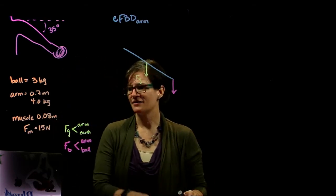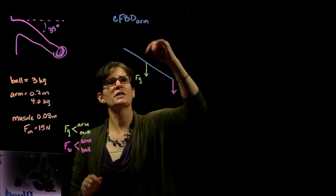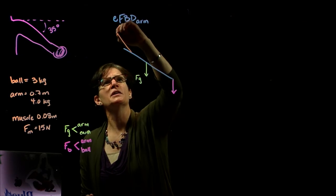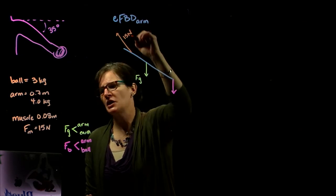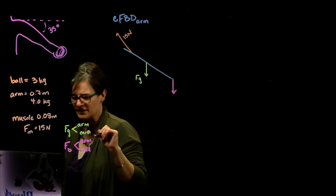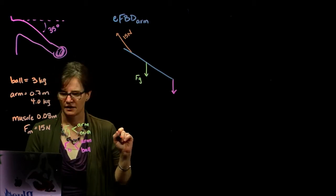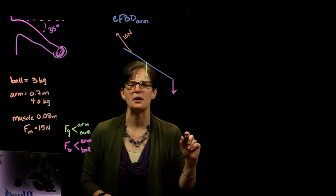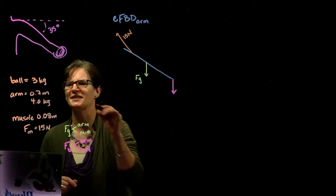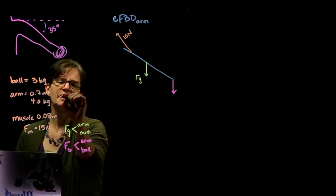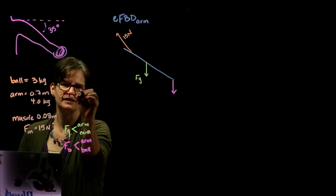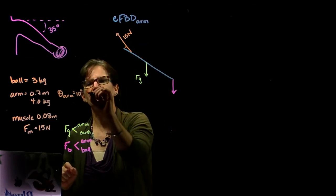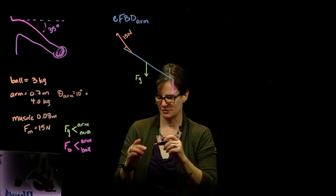We also have the deltoid muscle, and we're told that attaches at 0.08 meters from the arm, and it exerts 15 newtons of force in that attachment. All right, and I think, and it also tells us that it makes an angle of 10 degrees with the arm bone. I'm drawing this picture going, I'm missing an angle in here. So we're going to say the angle with the arm is 10 degrees. So that's this angle here, this one. I'll just put a little dot there to represent that that's the 10 degree angle we're dealing with.